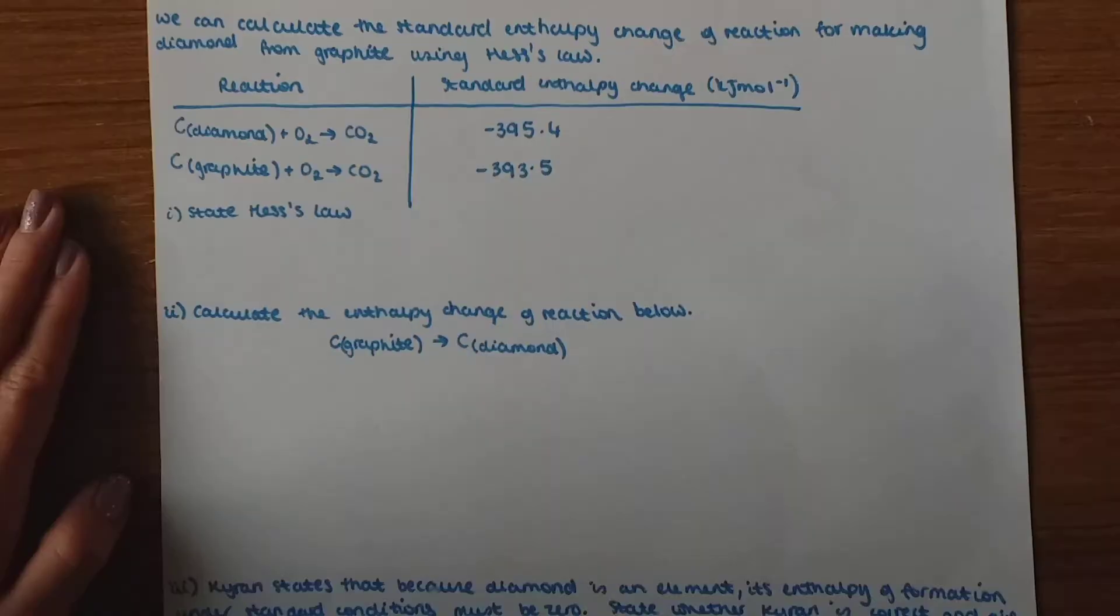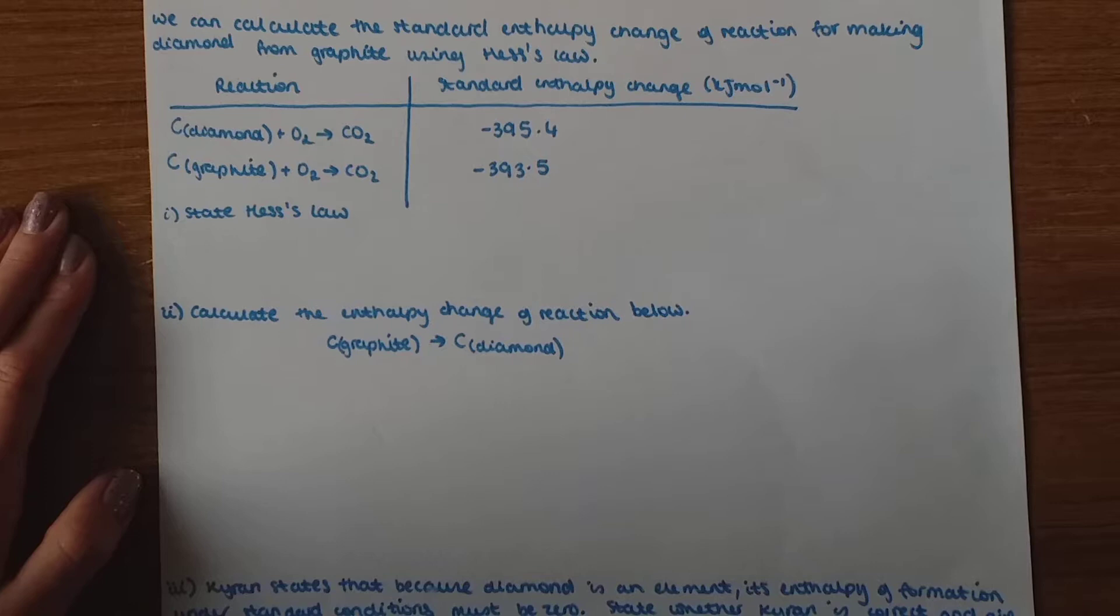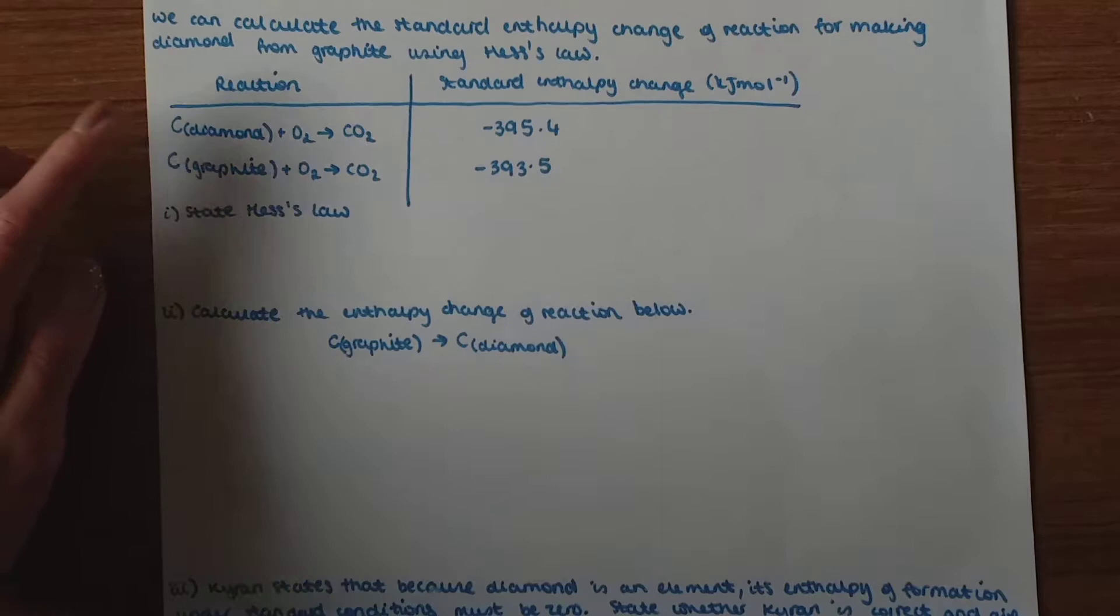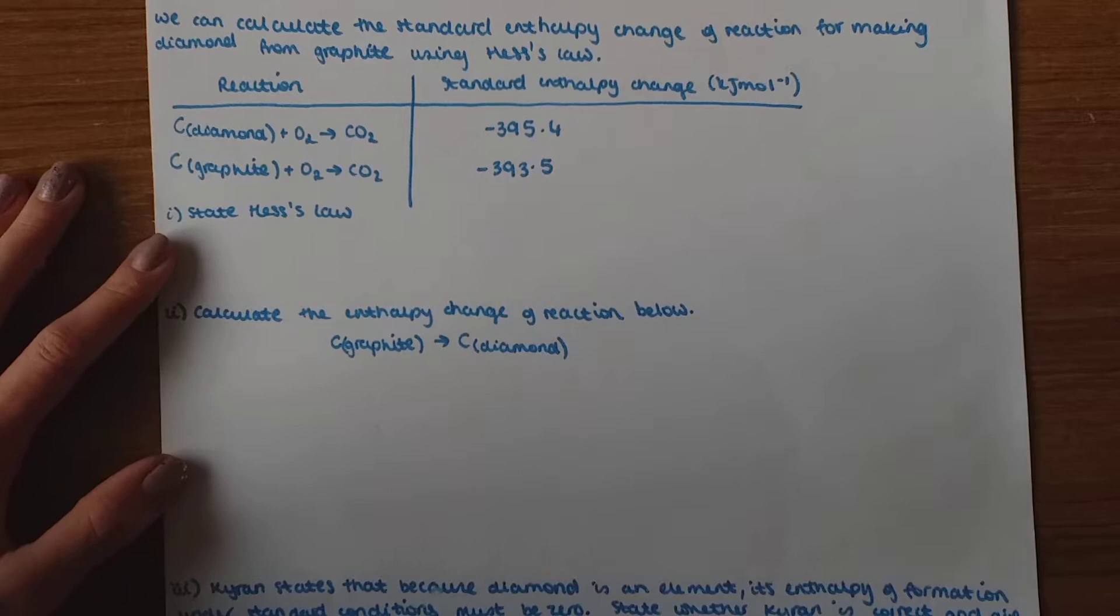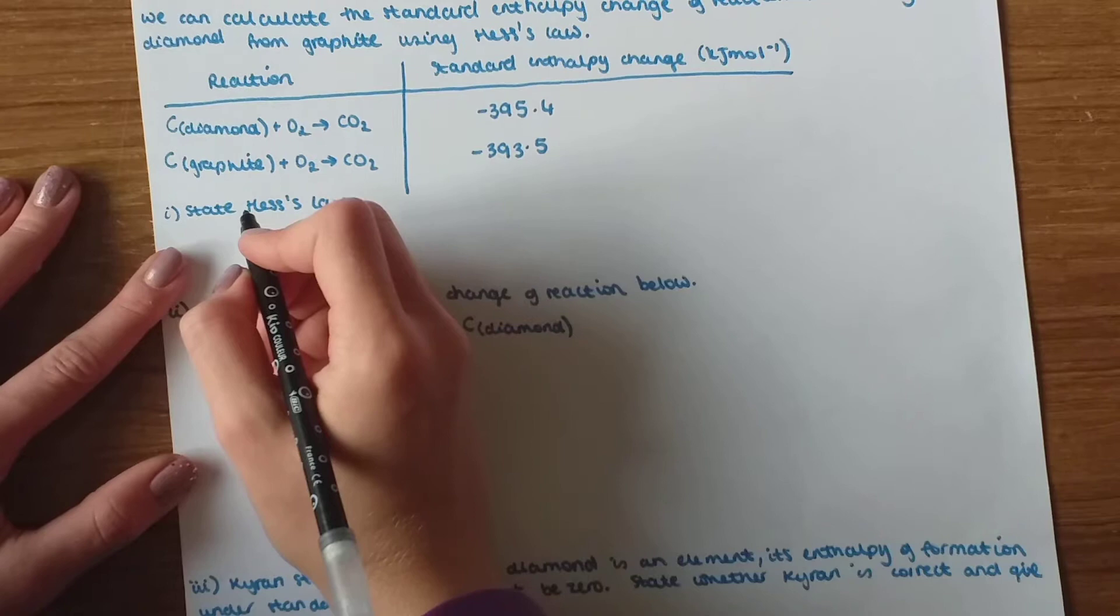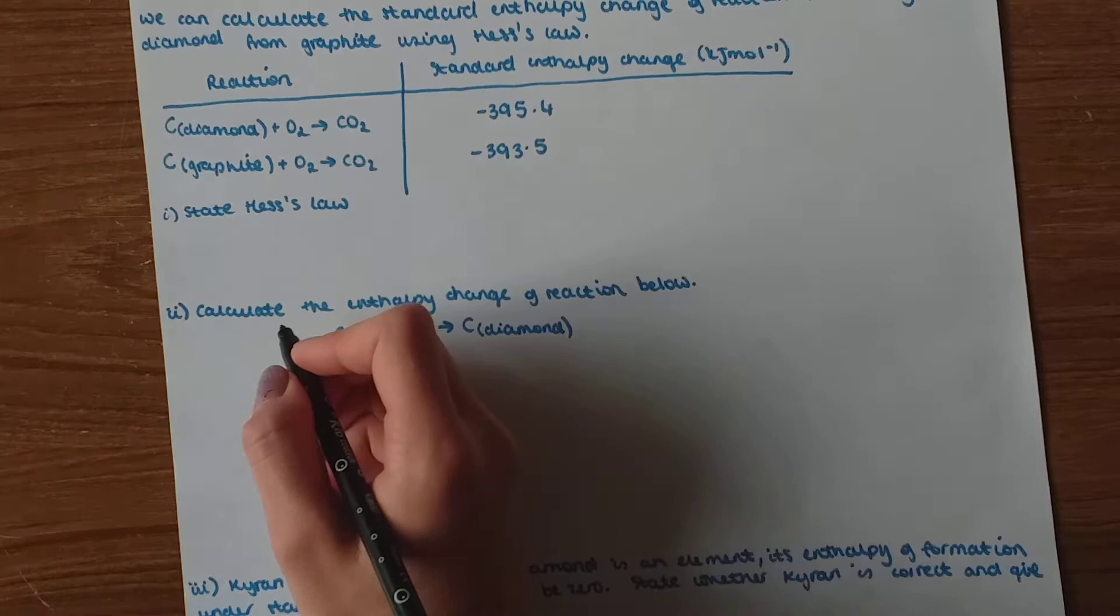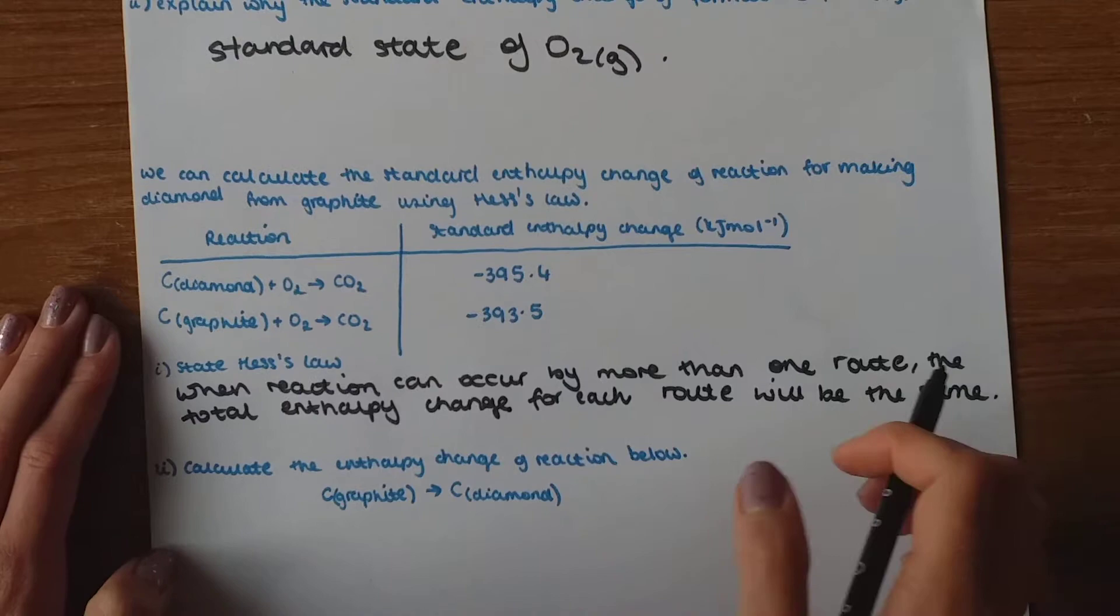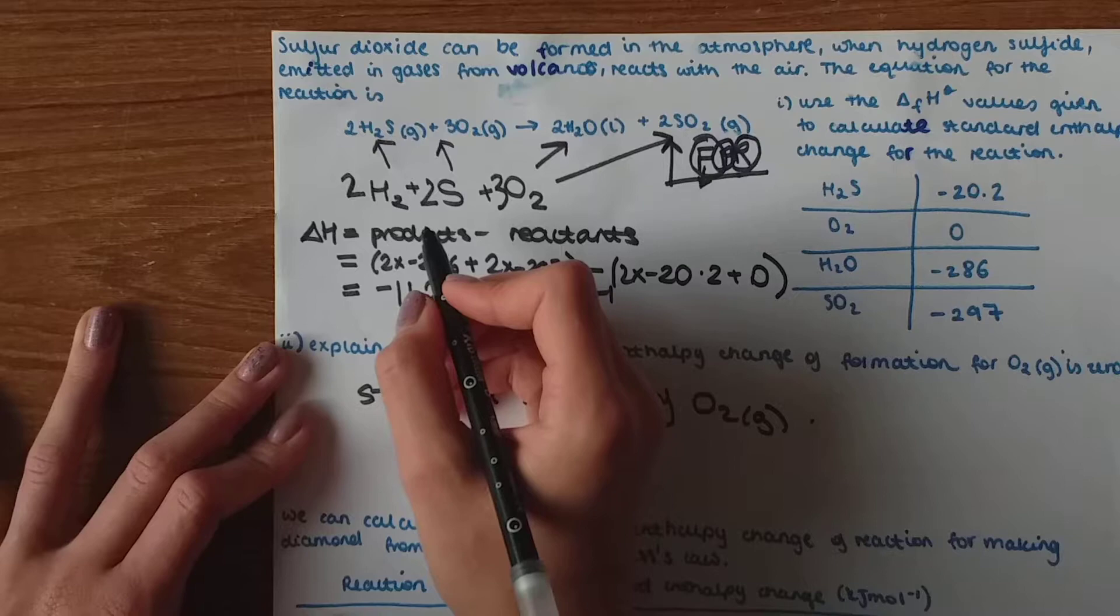So here is the next question. It's a bit long. So it says we can calculate the standard entropy change of reaction for making diamond from graphite using Hess's law. Now we've got in the table the reaction taking place and the standard entropy change. The first part asks us to state Hess's law. And Hess's law is when reaction can occur by more than one route, the total entropy change for each route will be the same. If you're not actually sure what this means we can look at the previous question.